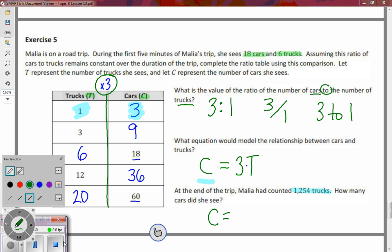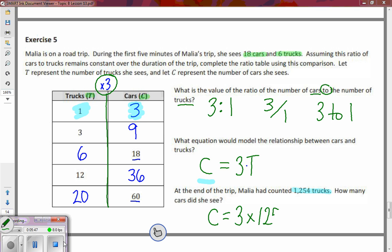So if I look at my cars, how many cars equals three times the amount of trucks that showed us is one thousand two hundred fifty four. When we do that math, we're going to find that the amount of cars is equal to...